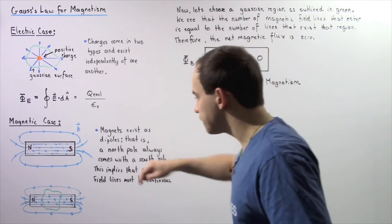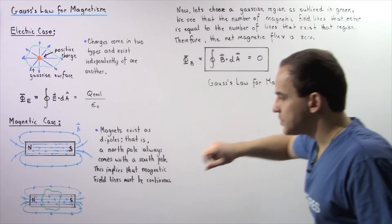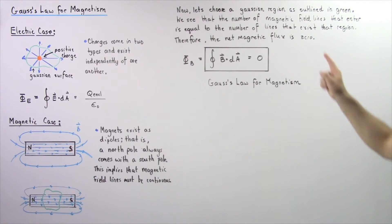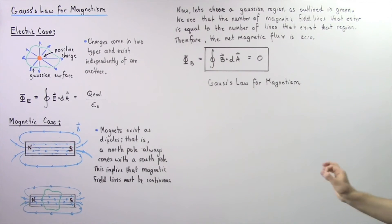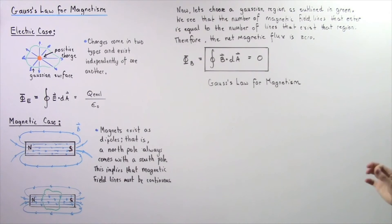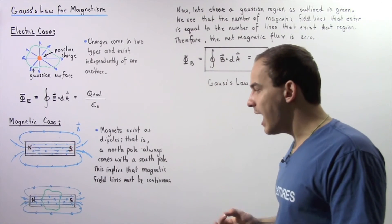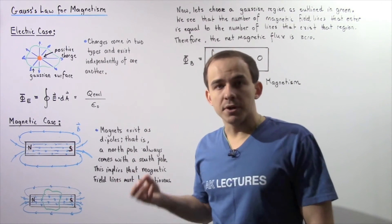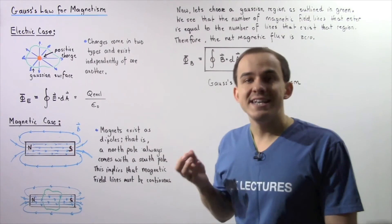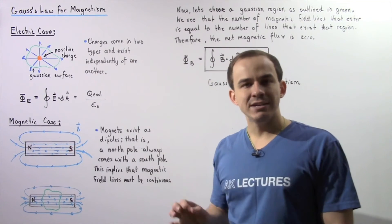Let's define the following analogous equation for magnetism by choosing a Gaussian surface, as shown by the following green outline. We see that the number of magnetic field lines that enter our Gaussian surface from the left side is equal to the number of magnetic field lines that exit this same region on the right side. That implies that the net magnetic flux through the Gaussian region is equal to zero.